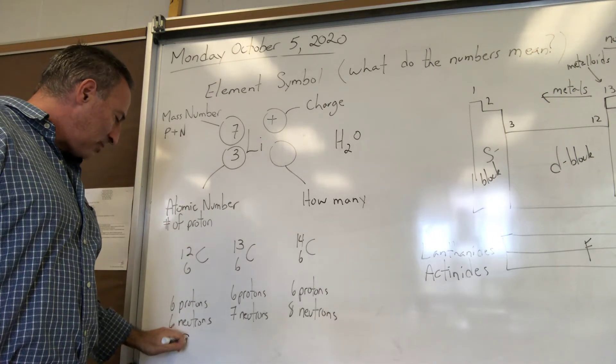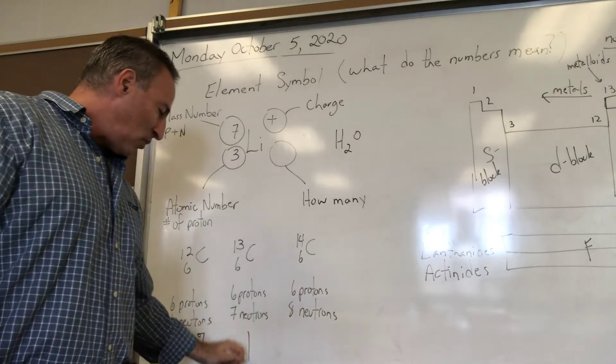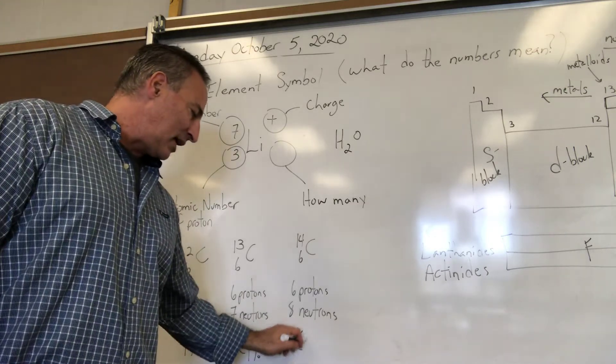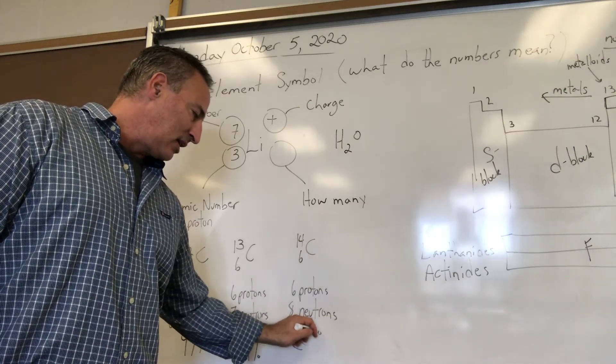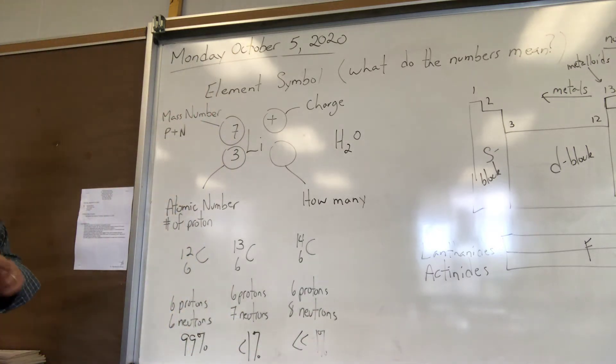The largest naturally occurring carbon is carbon-12. It's about 99% of the carbon that you find in the world. About 1%, a little less than 1%, is carbon-13, and way less than 1% is carbon-14—actually just trace amounts.